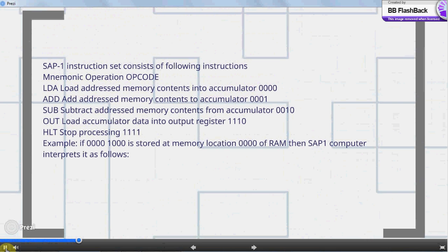Example: if 0000 1000 is stored at memory location 0000 of RAM, then SAP-1 computer interprets it as follows.